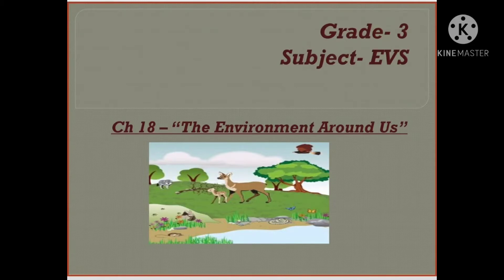All living things are natural things that are present in the environment — for example, plants, animals, sun, wind, etc. Natural things are divided into living things and non-living things. Plants, animals, and human beings are living natural things, whereas sun, wind, air, and water are non-living natural things. In this chapter, let us learn about the relationship between living organisms and the environment.